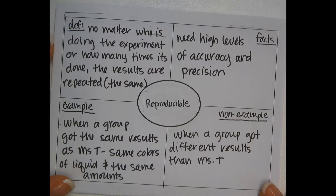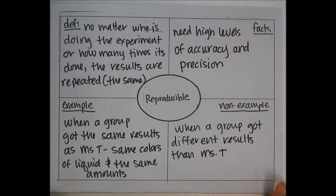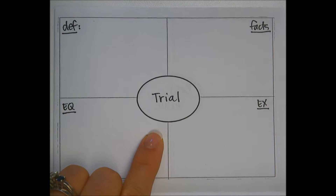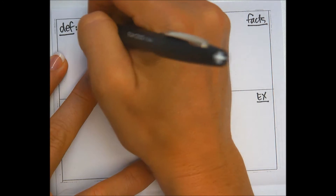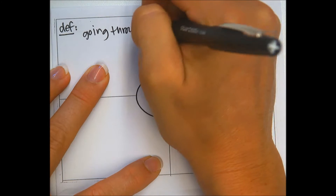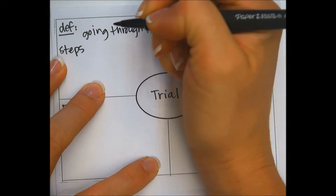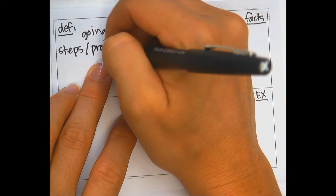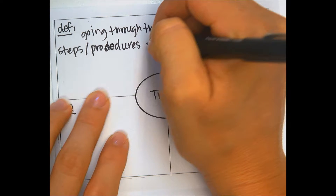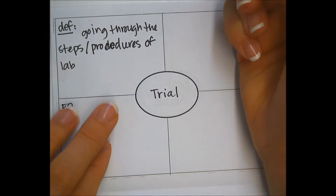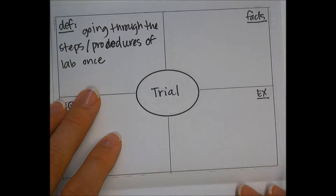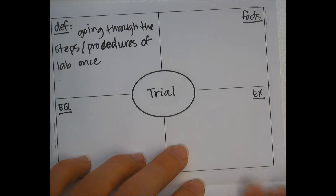If you need to pause the video at all to finish your notes, please do so. Now we're going to move on to the next spot. Flip the reproducible side down and we're starting where it says 'trial.' Trials in science has to do with going through the steps or procedures of an experiment or lab activity one time.